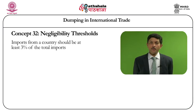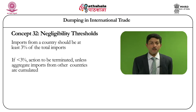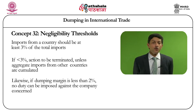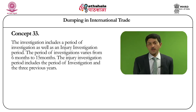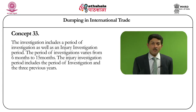The Anti-Dumping Agreement also requires certain negligibility thresholds. If the imports from a particular subject country are less than 3% of the total imports, then the anti-dumping authority should terminate the investigation against that country, unless the authority aggregates imports from all other countries which fall below this 3% level threshold. Likewise, if the dumping margin is less than 2%, no duty can be imposed against the company concerned. The investigation includes a period of investigation as well as an injury investigation period. The period of investigation generally varies from 6 months to 15 months; in ordinary cases it is considered to be 1 year. The injury investigation period includes the period of investigation and the 3 previous years.